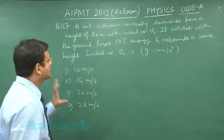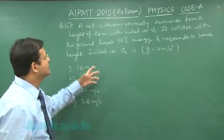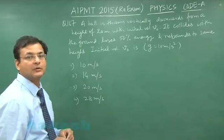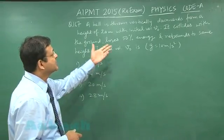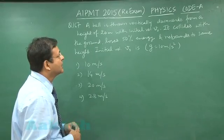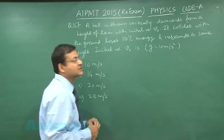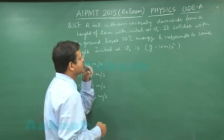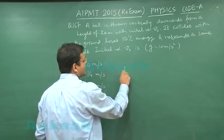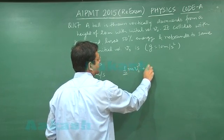Question 167 is based on conservation of energy. In this question, a body has been thrown from the top with some initial velocity V₀. The total energy it has is kinetic energy plus potential energy — that is, half mV₀² plus mgh.